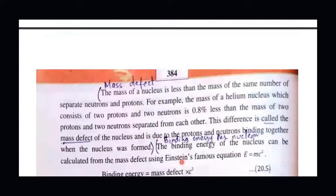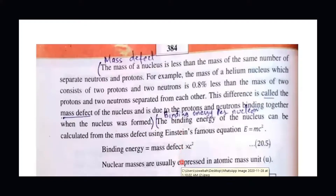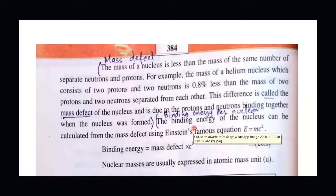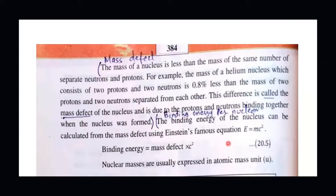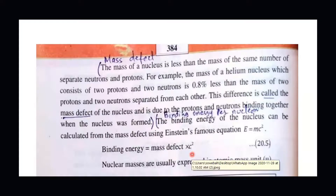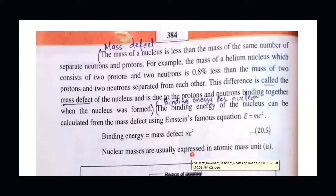The next topic is binding energy per nucleon. Neutrons and protons together are called nucleons. To find binding energy per nucleon, we take the binding energy (delta M times c squared) and divide it by the atomic mass number, which is the total number of nucleons. This gives us the binding energy per nucleon.